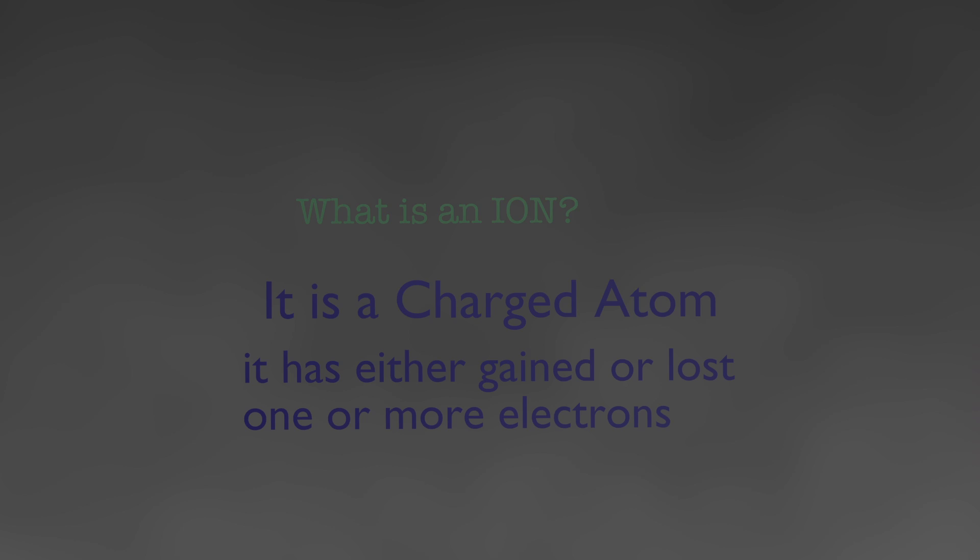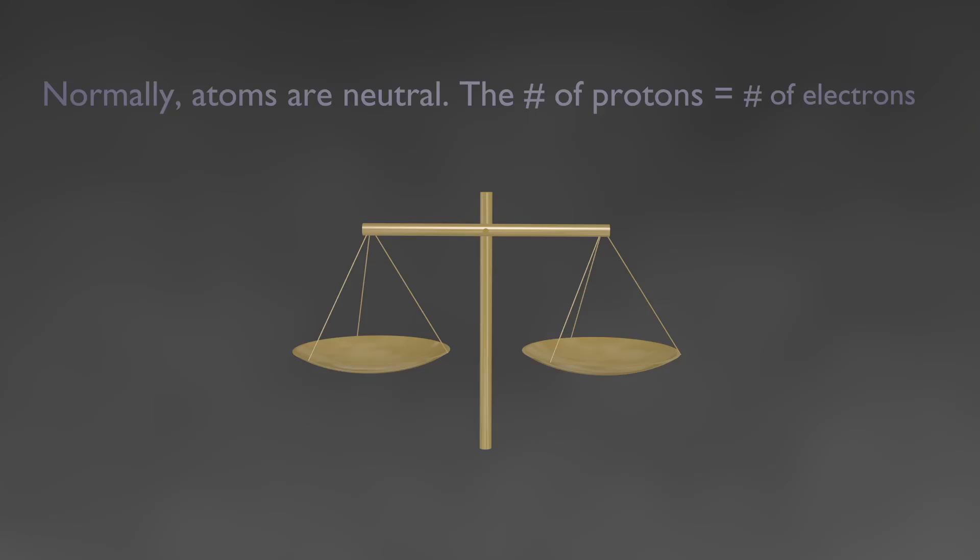See, most of the time atoms are neutral. If an atom is neutral, that means the protons and electrons balance each other out. One is a positive charge, one is a negative charge, so they need to be equal in order to be balanced. If the number of protons is different than the number of electrons, then the atom becomes an ion.